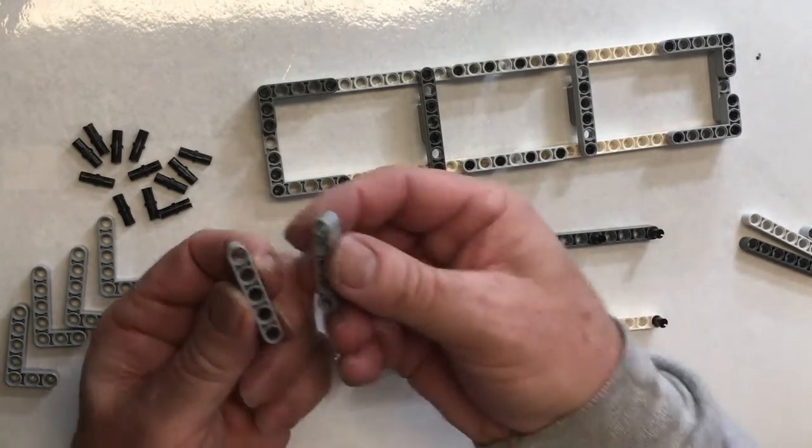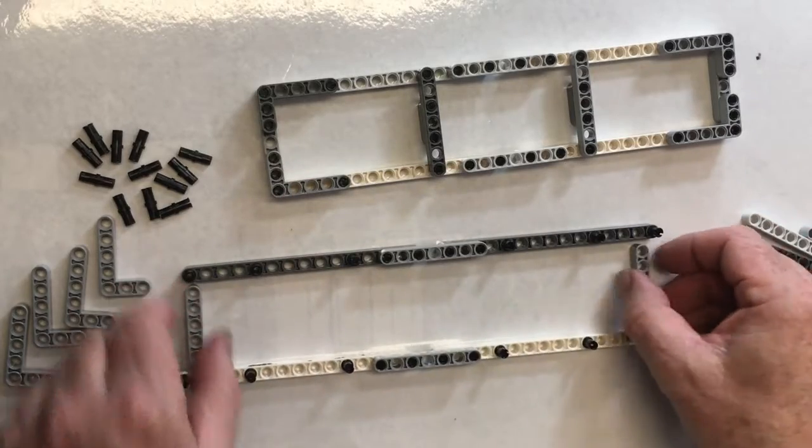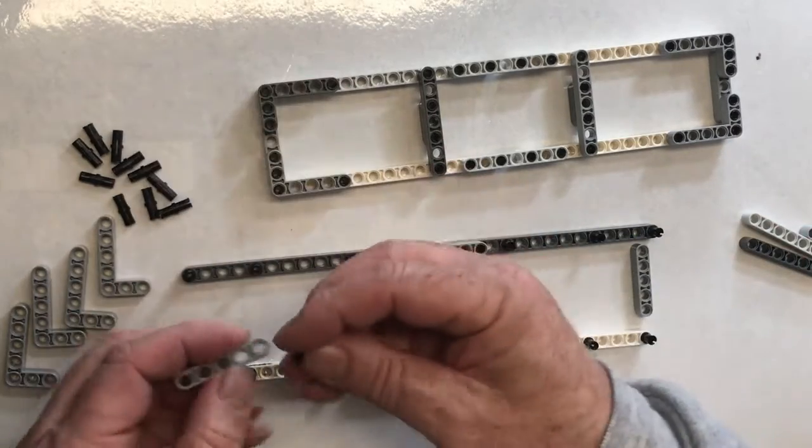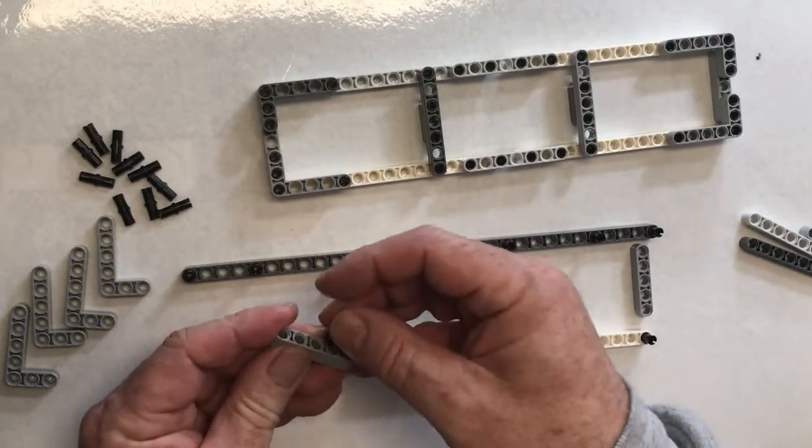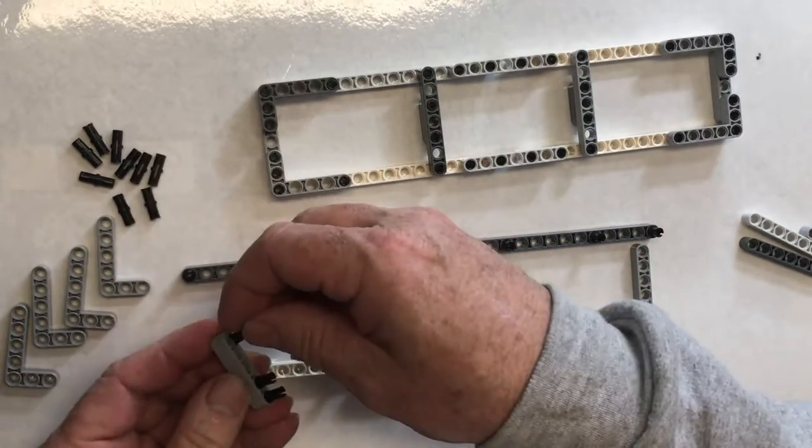Now I'm going to take the two fives, the end pieces, which are going to go here. I'm going to place four pegs in each one of these, all the holes except the middle one.